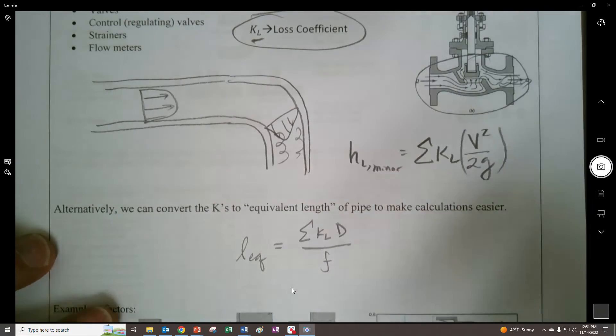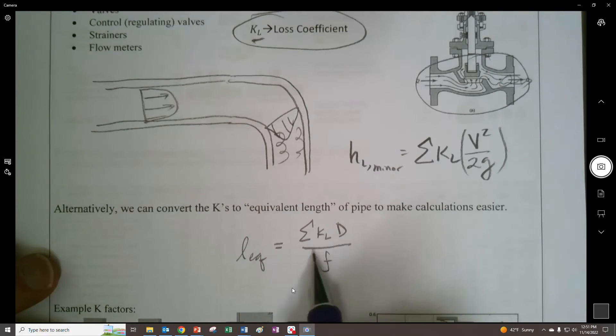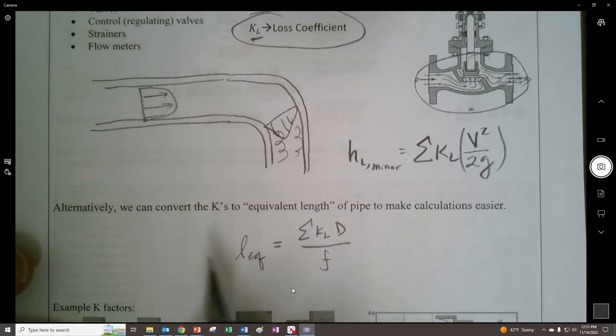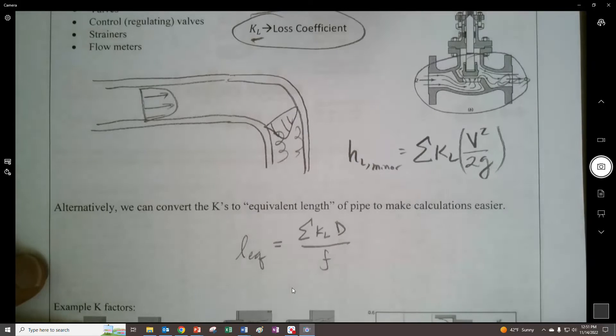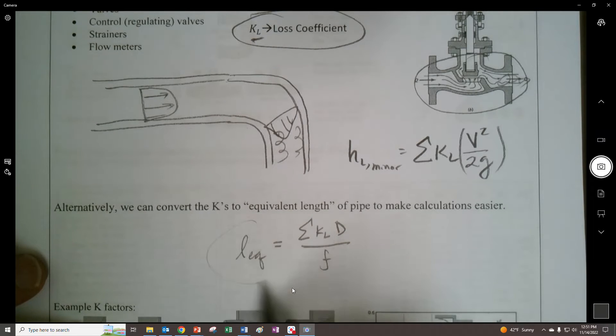So you could think of these as being coefficients that are magnifying, that are being multiplied by the dynamic pressure or dynamic head within Bernoulli. There's also another way, by the way. Some places or some books use this right here, where they go the equivalent length of pipe is another method.